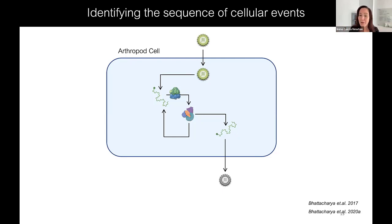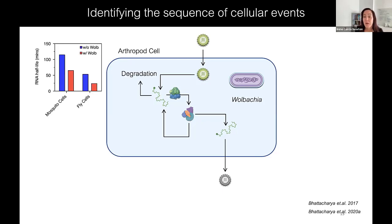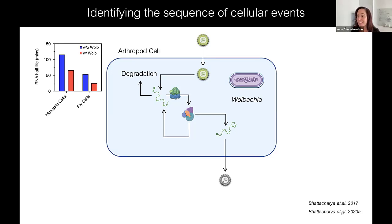What happens when Wolbachia is present? We've shown that the virus genome, as soon as it enters the cell, is rapidly degraded much more quickly in the presence of Wolbachia — the half-life of the viral genome is reduced. In mosquito or fly cells with Wolbachia present, there is about a half reduction in the half-life of the virus, so the genome coming into the cellular environment can't stick around as long and can't be acted upon by ribosomes to create more viral protein or more genome.